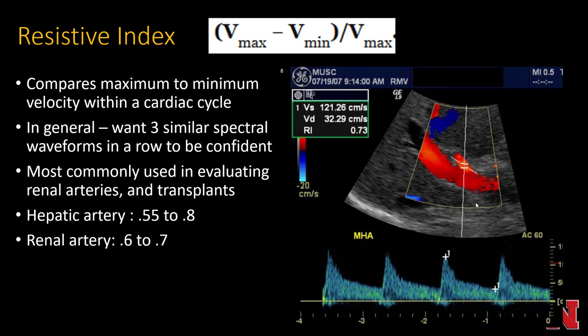In transplant pathology, an RI below 0.5 raises concern for stenosis. Post-stenotic, the maximum systolic velocity decreases because flow must pass through the stenosis, while the diastolic velocity stays the same or may even be higher to preserve flow to the organ. As those two values converge, the resistive index falls below 0.5 — and in severe cases can be as low as 0.3 to 0.35.